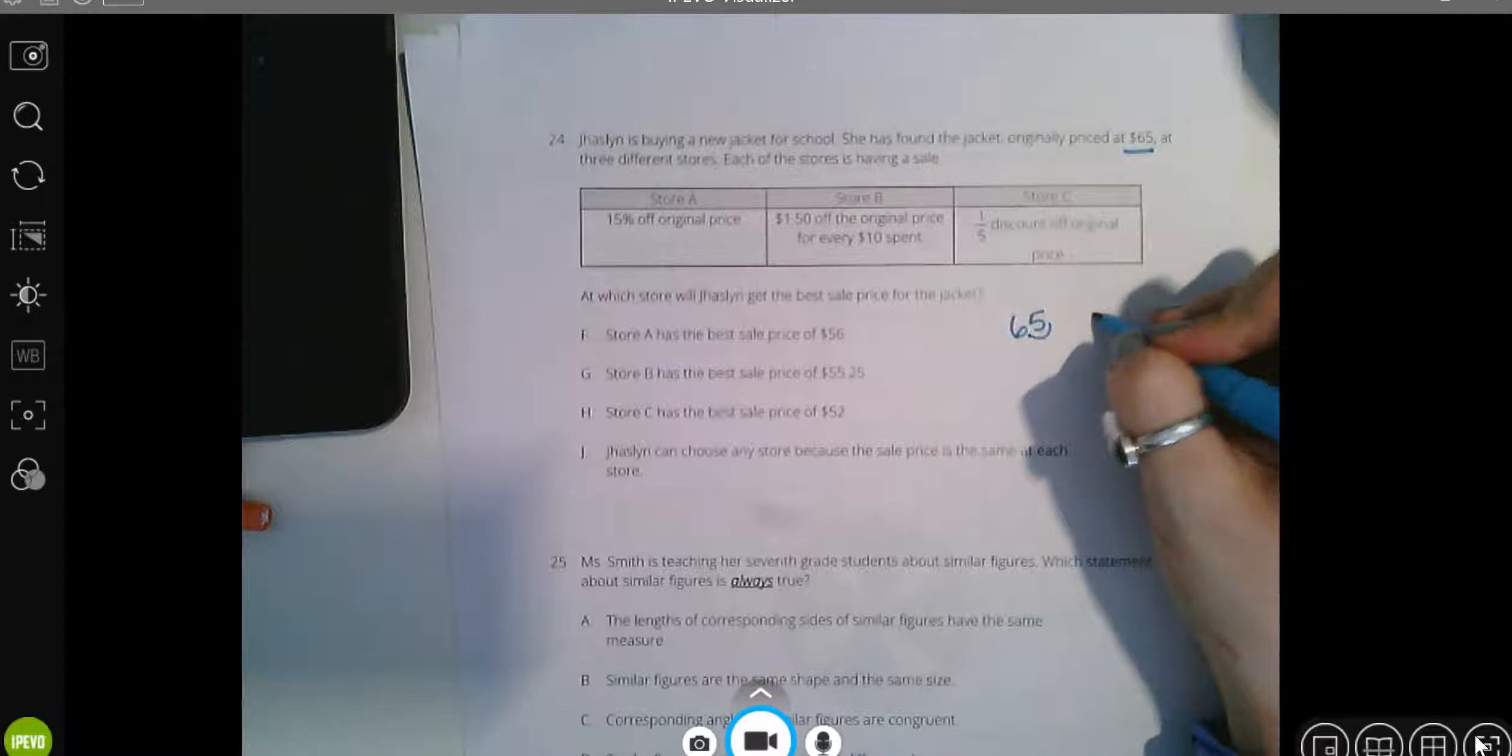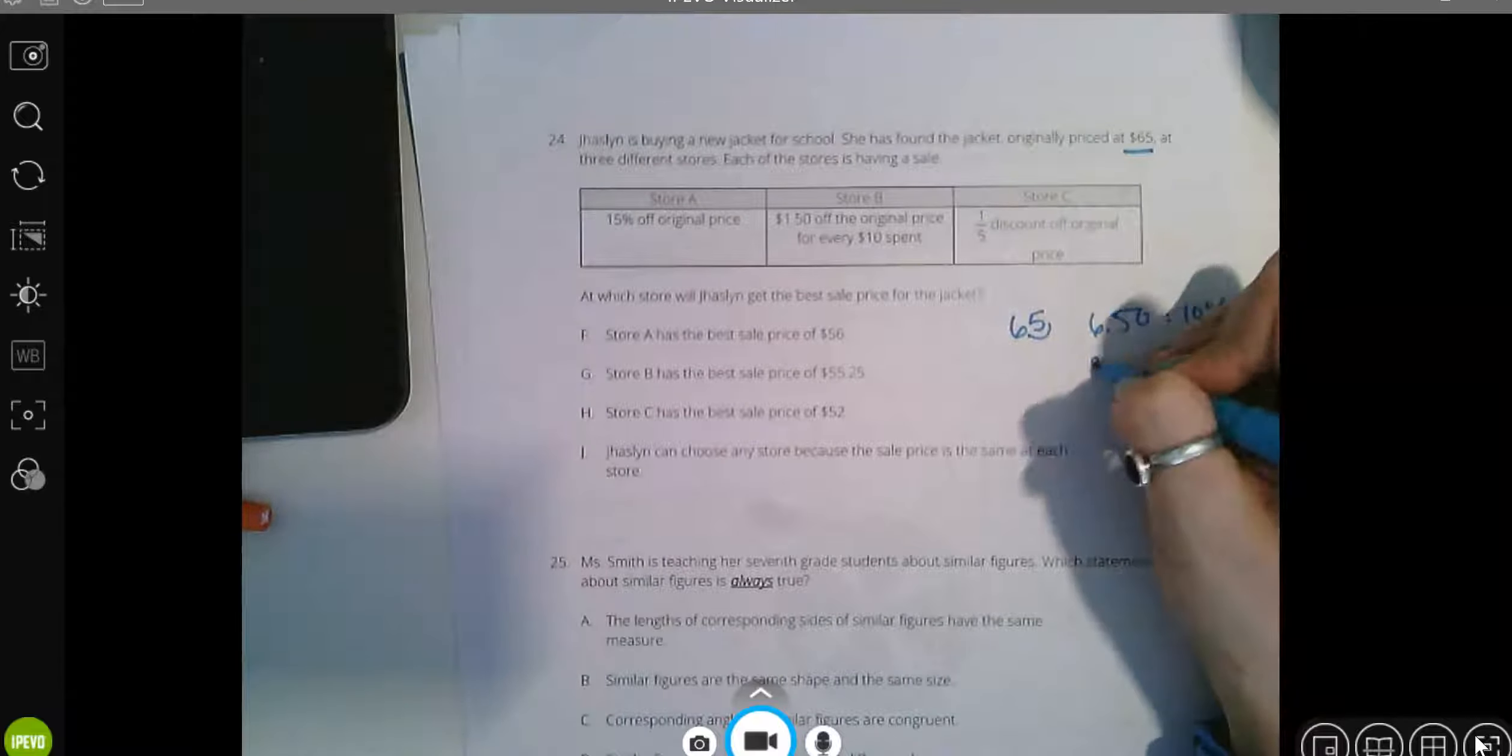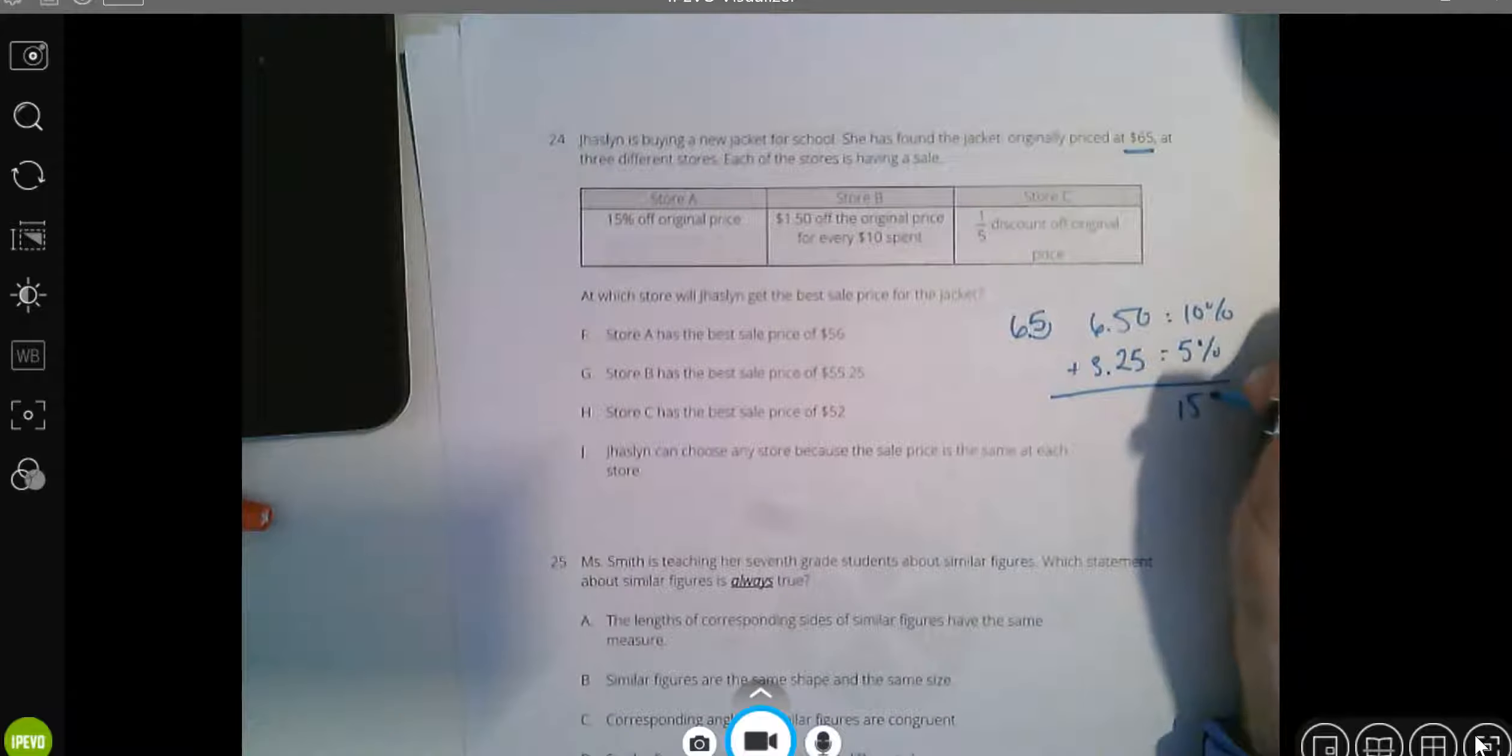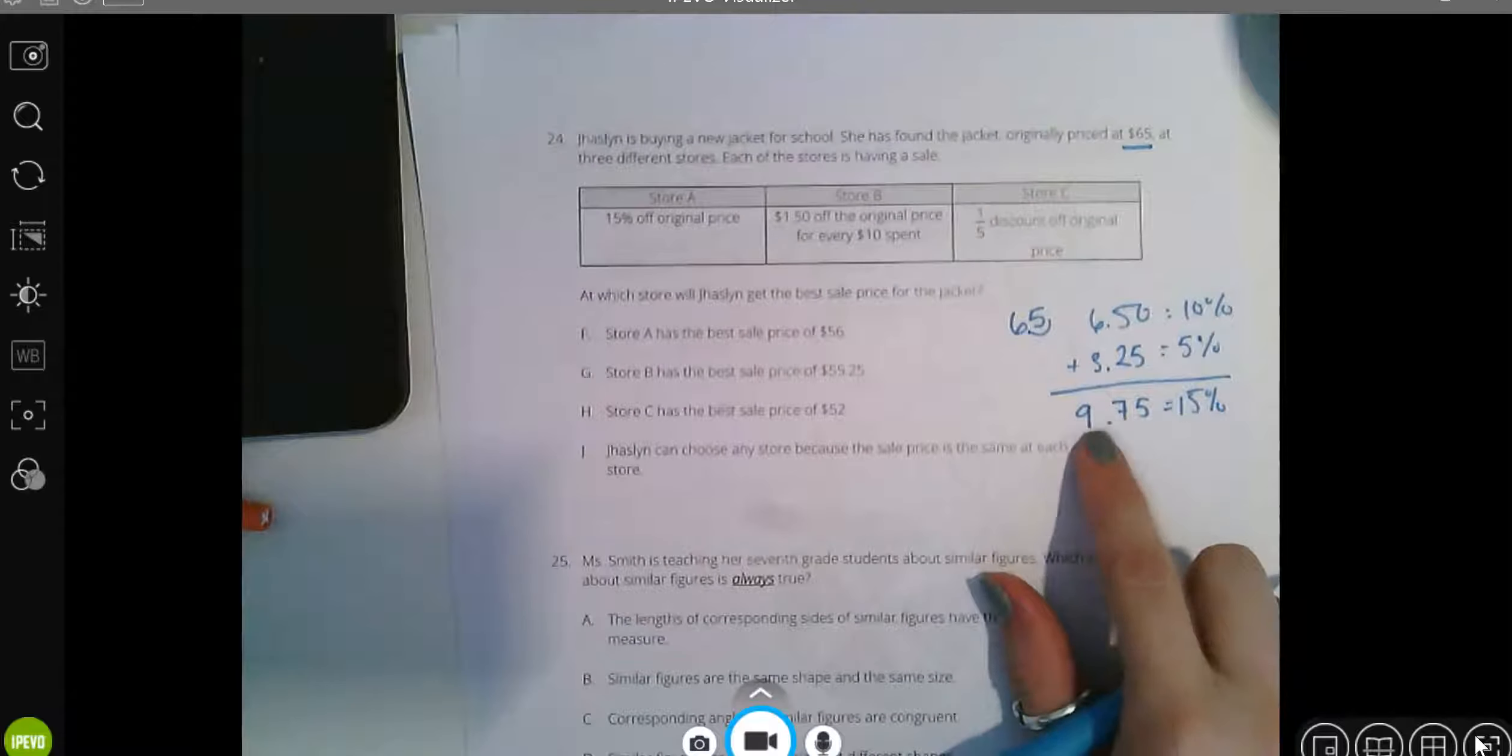So the coat is $65. If we take 15% off, it was $65. 10% is $6.50. 5% is half of that, so it'd be $3.25. Add that up. That's gonna give you 15%.